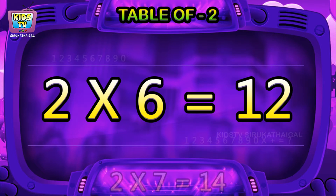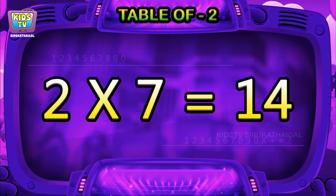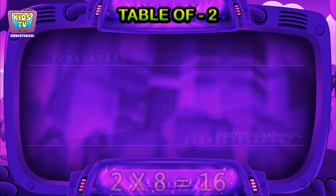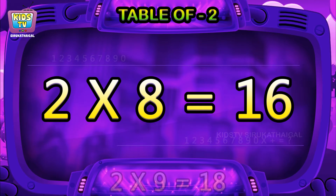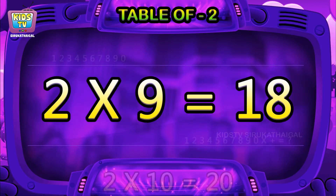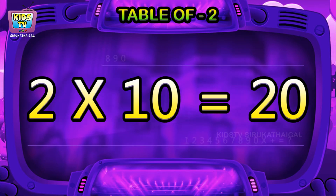Two six is twelve, two seven is fourteen, two eight is sixteen, two nines is eighteen, two tens is twenty.